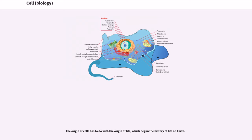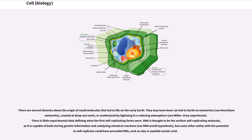The origin of cells has to do with the origin of life, which began the history of life on Earth. There are several theories about the origin of small molecules that led to life on the early Earth. They may have been carried to Earth on meteorites, created at deep sea vents, or synthesized by lightning in a reducing atmosphere, see Miller-Urey experiment.